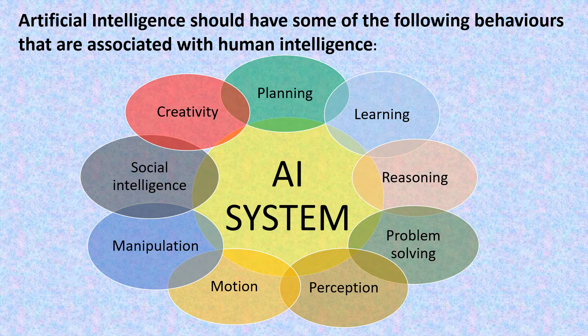Before doing any work we all plan, so planning behavior has been given to AI systems as well. Learning is also a behavior of human beings and we have passed this learning behavior to the machines. Machines are able to solve reasoning problems. Any kind of problem can be solved easily by machines if we have given them proper coding or programming. Similarly, motion, perception, manipulation, creativity and social intelligence — these are all human behaviors that we are giving to the machines. Machines will think like humans only when we pass some behaviors of human intelligence to them.